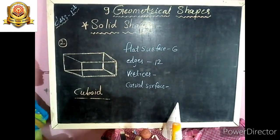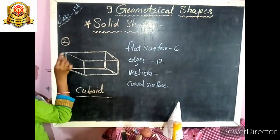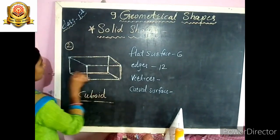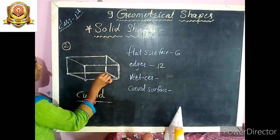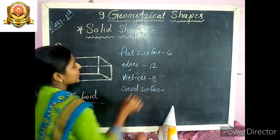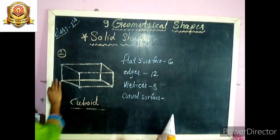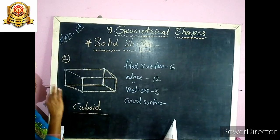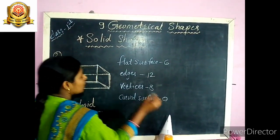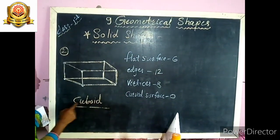Does cuboid have any curved surface? No, cuboid has only flat surfaces — curved surface is 0. The spelling of cuboid is C-U-B-O-I-D, cuboid.